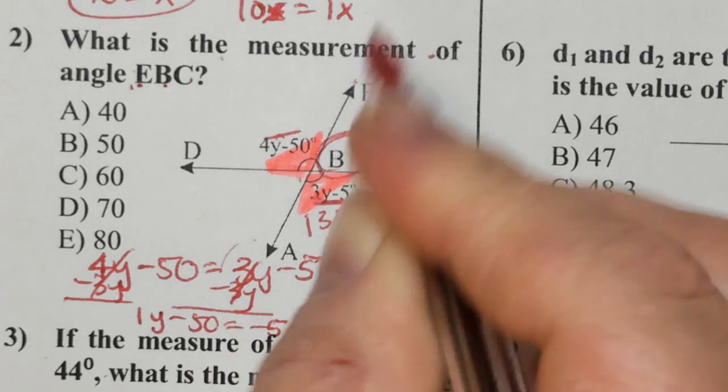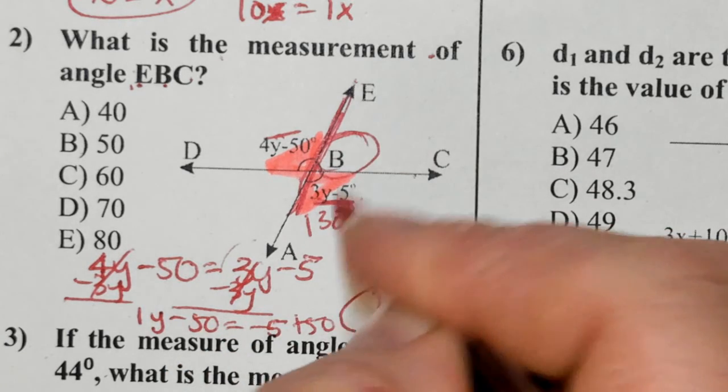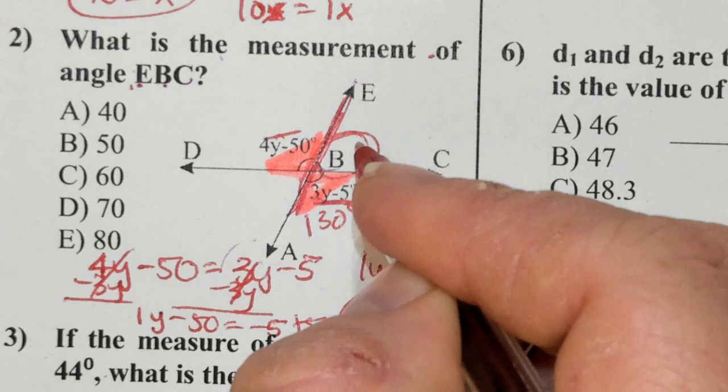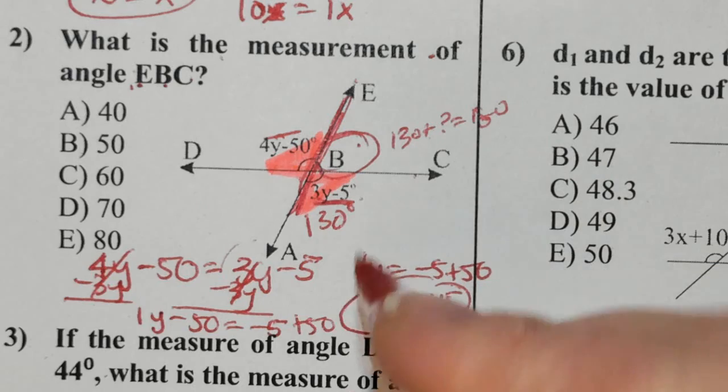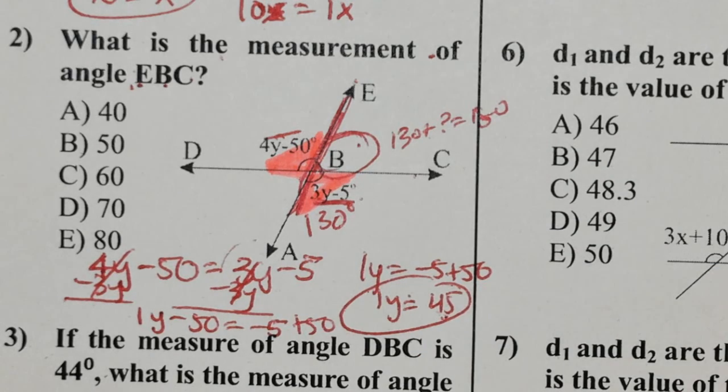What does that leave this angle? Well, I know they're supplementary. So 130 plus what measurement gives you 180? 130 plus what value is 180? The correct answer is 50B.